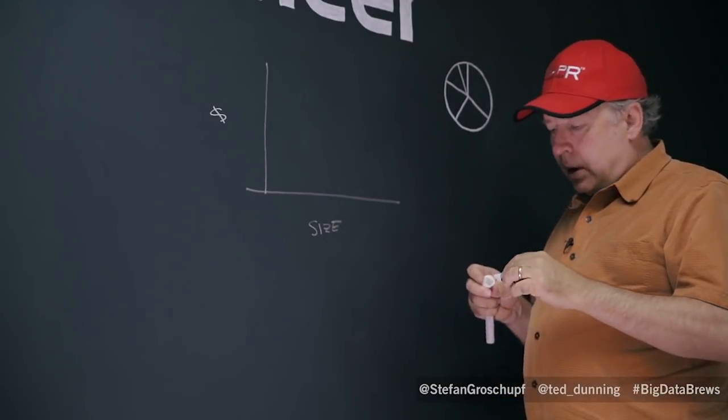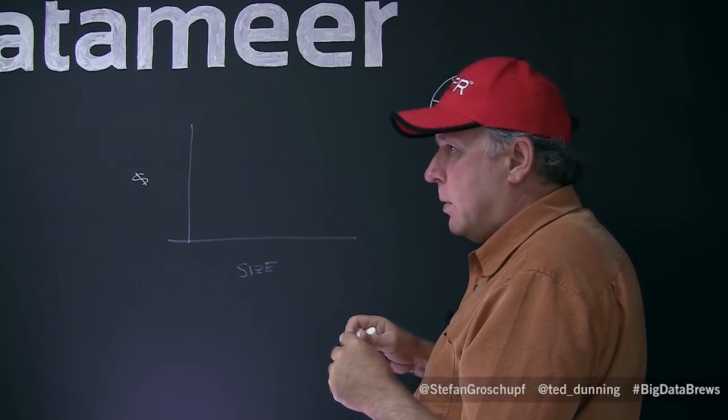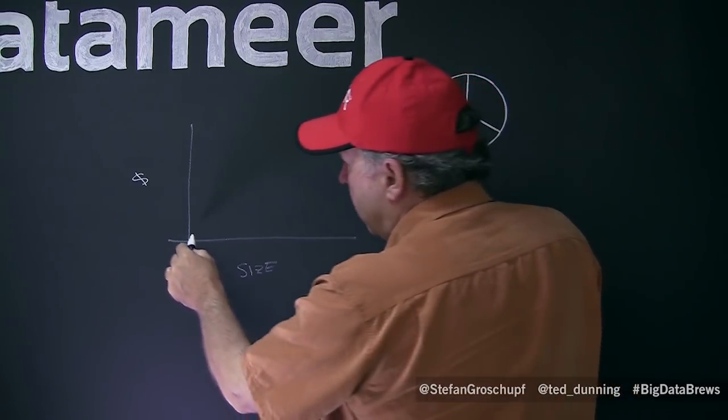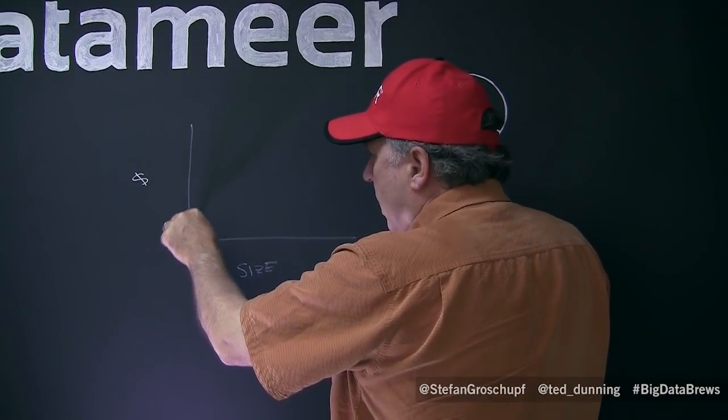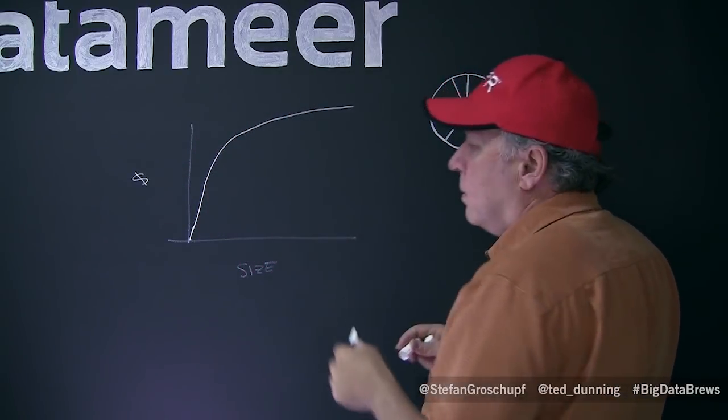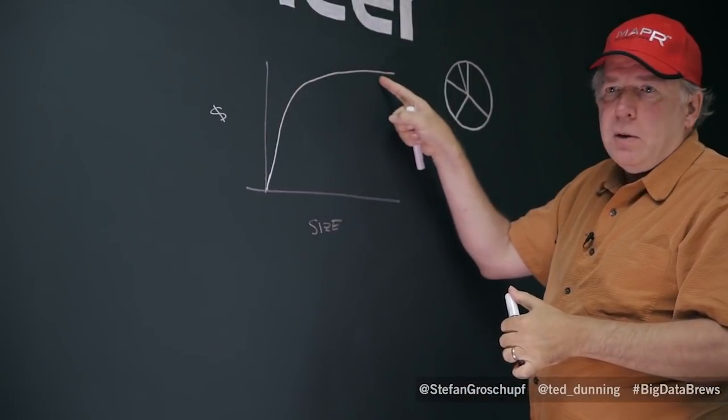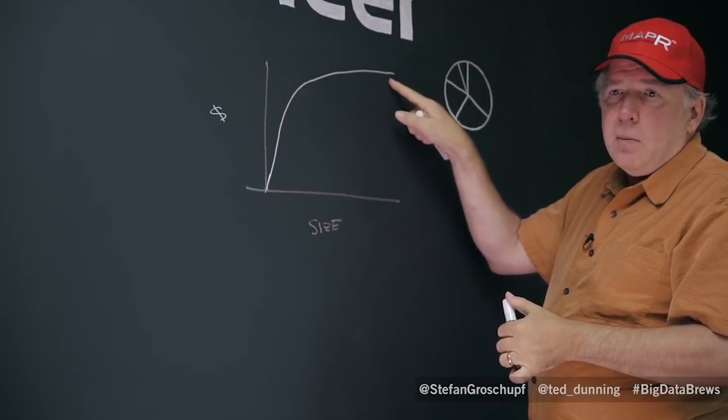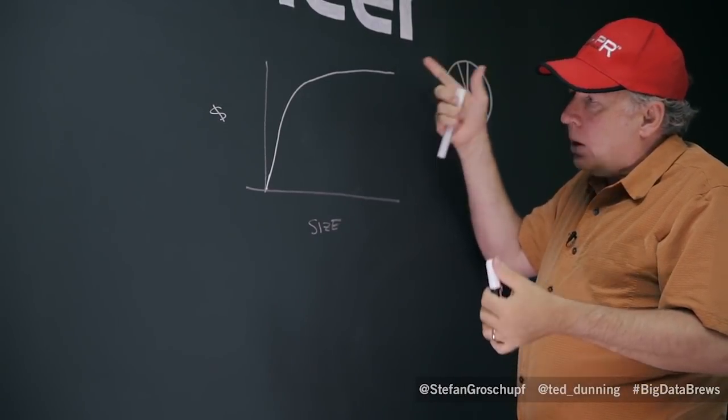So unless you're really an idiot, you look at the most valuable byte first. And so the value goes up initially very steeply. But eventually you run out of most valuable bytes and so it goes up more and more slowly. This is just always true. It goes up fast and it goes up slow. It never stops going up because you always learn something.